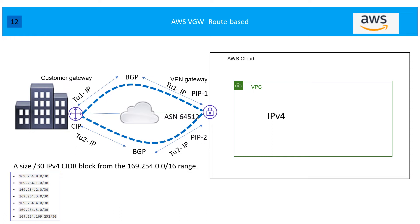When configuring our tunnel to AWS, AWS kept high availability in mind, so technically you are going to get two IP addresses and those are going to be public in nature — PIP1 and PIP2. These are the two public IP addresses on the AWS side. The customer IP address is also going to be public, because you are forming a tunnel based on your internet infrastructure and technically talking over the internet IP addresses.